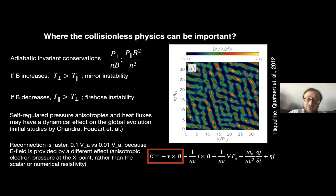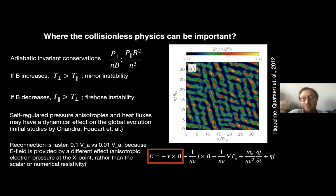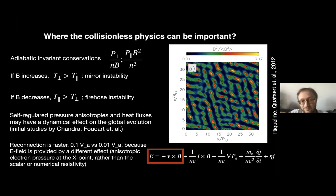This anisotropy is known to be unstable to what's called mirror instability. It enhances small-scale Larmor-sized fluctuations, bunching magnetic fields into a collection of mirrors that scatter particles and try to restore isotropy. There is a similar instability if you decrease the B field: the parallel temperature gets enhanced, which is unstable to what we call a firehose.